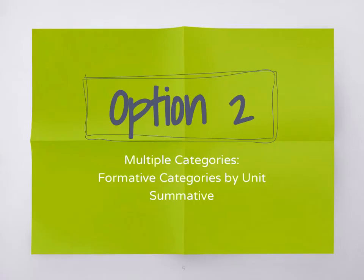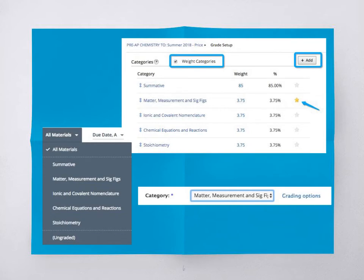Option two would involve creating formative assignment categories for each unit — for example, Romeo and Juliet, Othello, etc. You would determine the weights for these categories, again with a maximum of 15% for formative work, and the summative would again have a weight minimum of 85%. The advantage of this gradebook setup is that it allows a teacher to sort formative work by unit, which could be helpful as the number of formative assignments increases throughout the semester.